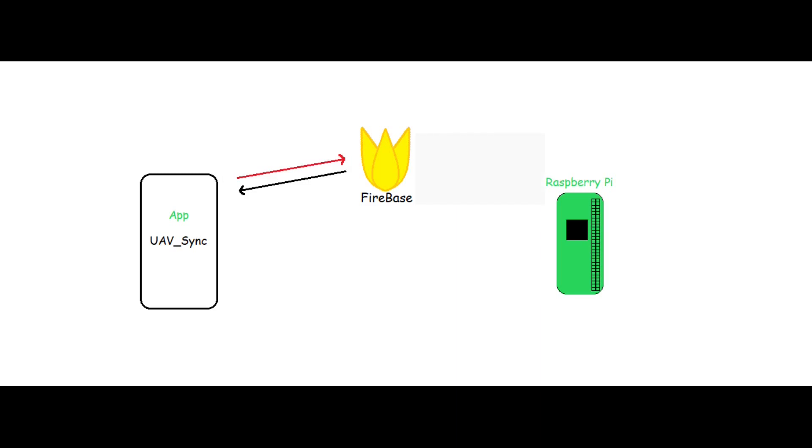Also the Pi can send flight data to the app. So firstly, I will set up the Raspberry Pi, then I will make the Android application.